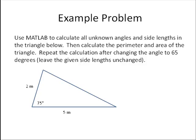Then calculate the perimeter and area of the triangle. Then repeat the calculation after changing the angle to 65 degrees, leave the given side lengths unchanged. Okay, so let's see how we're going to do this.